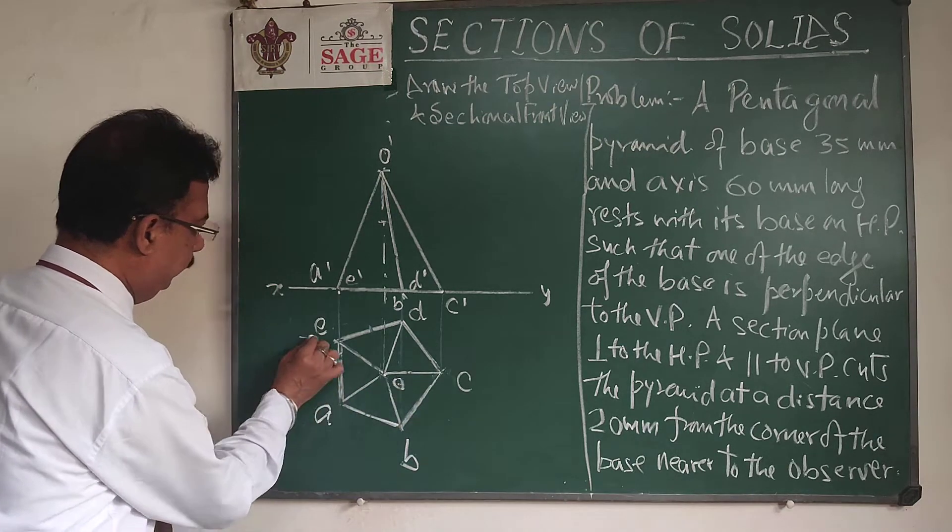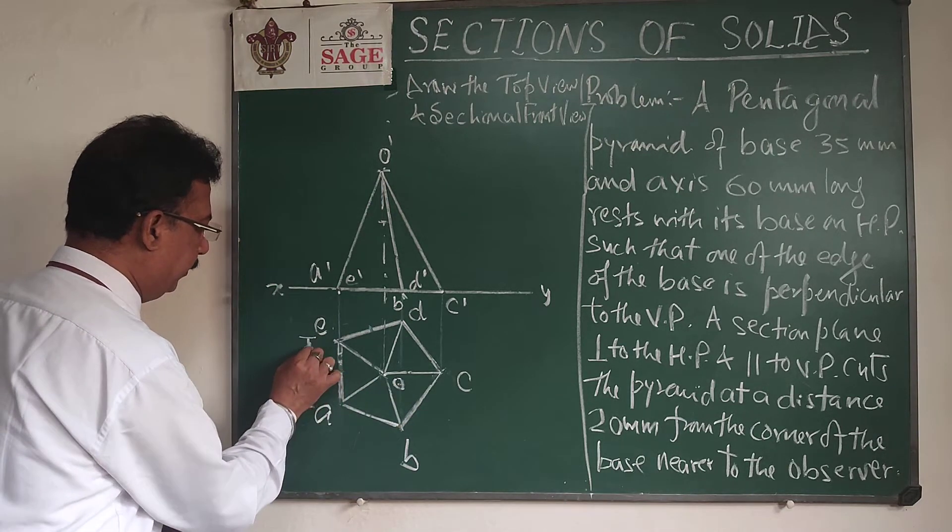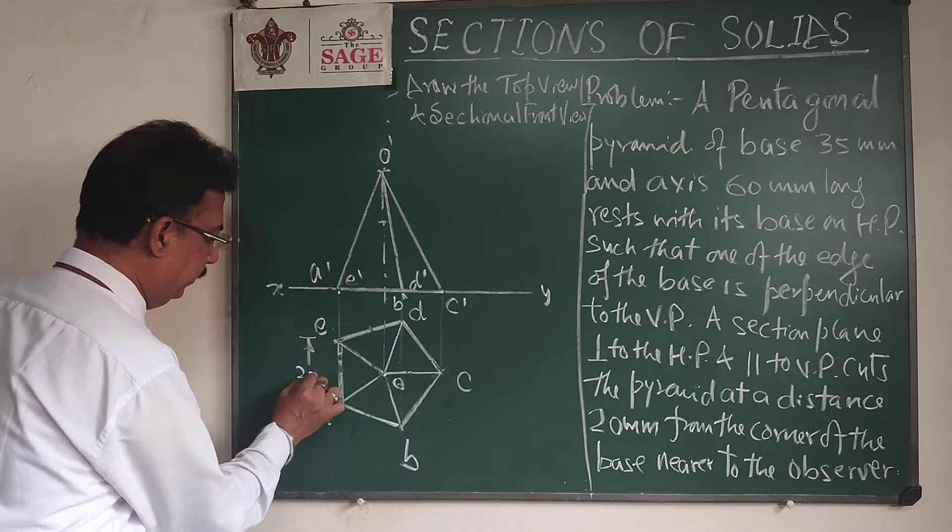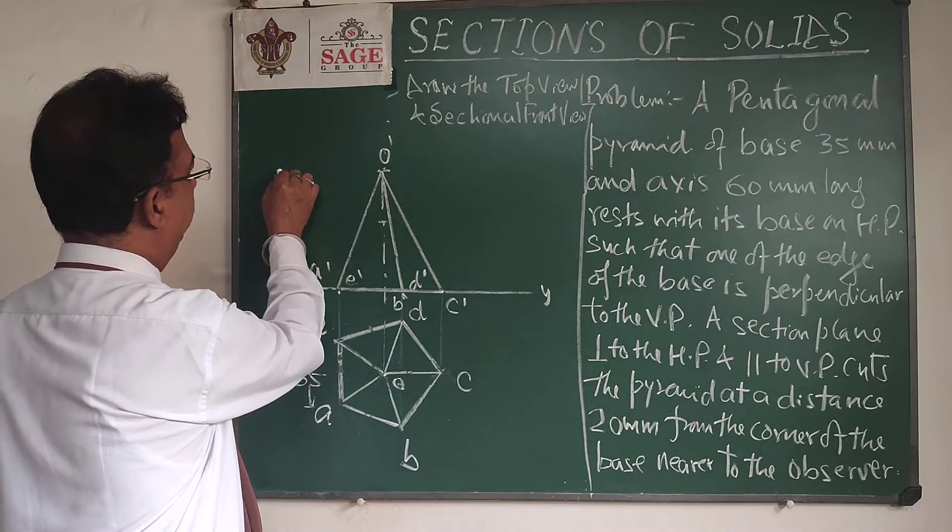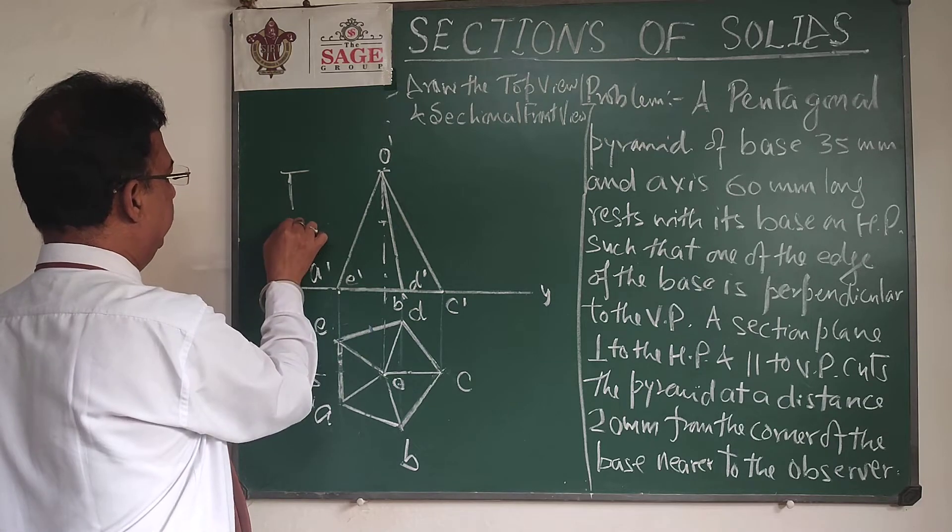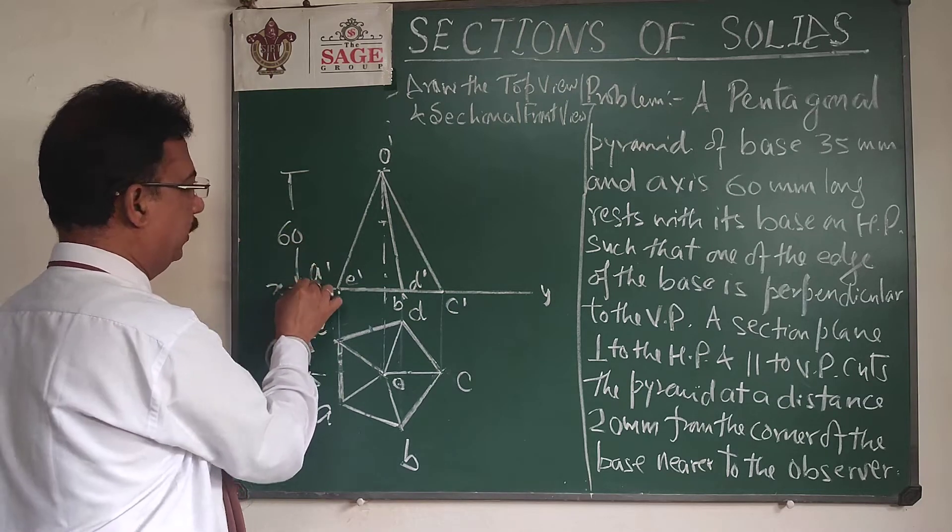Then its front view and this distance will be, the dimension will be 35 mm. Then front view, height will be given that is 60 mm. So we will draw the front view and the top view.